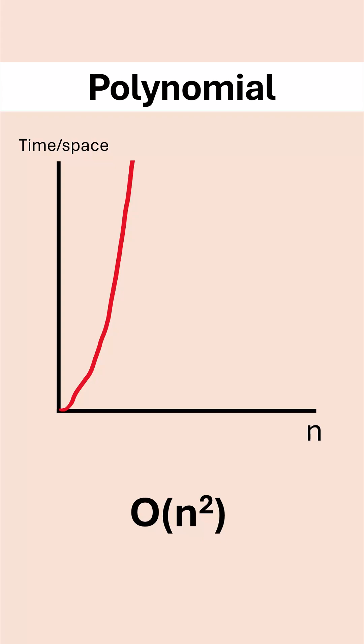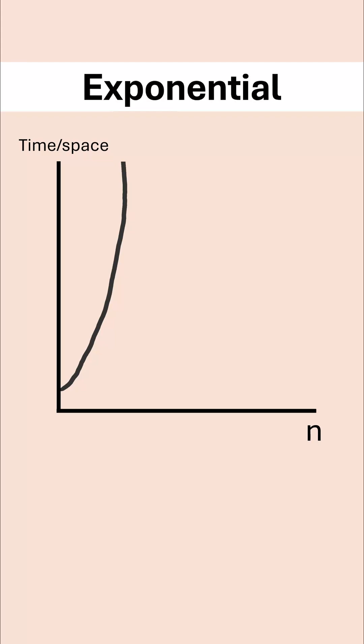There's one which is even worse than polynomial. This is the exponential complexity, where it's often O(2^n), and this one grows really fast. It means it performs really badly as the input size is big.